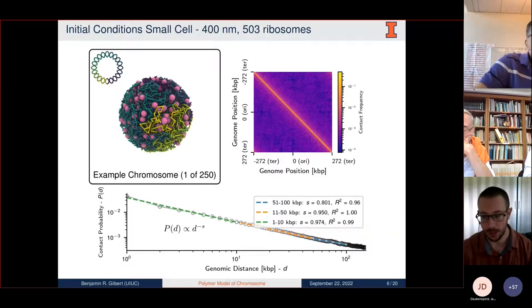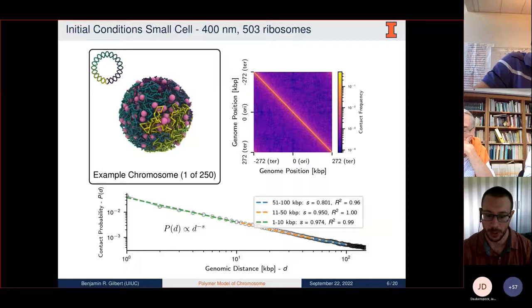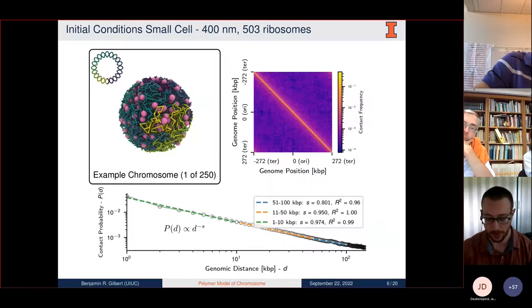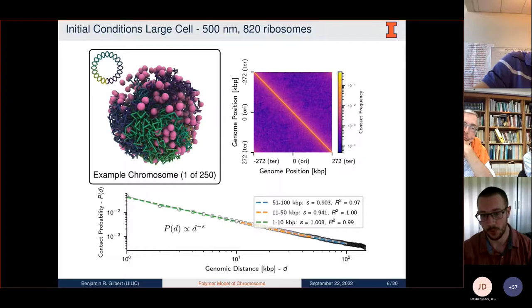We validated this by calculating in-silico contact maps and looking at the power law fit to the contact probability. This also works for the large cell with the exact same results.